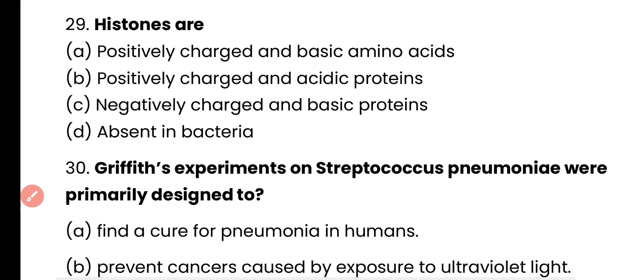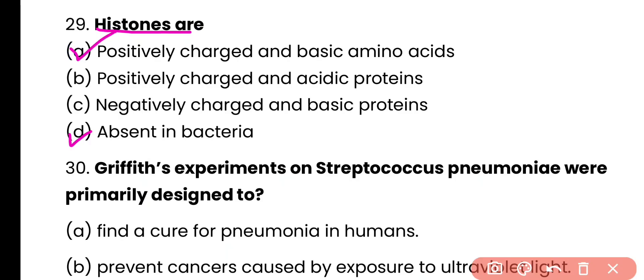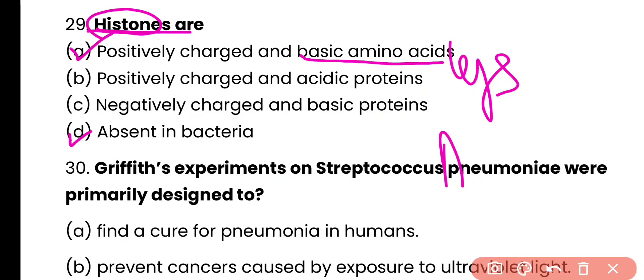Question number 29. Histones are: positively charged and made of basic amino acids, positively charged and acidic protein, negatively charged and basic protein, or absent in bacteria? Correct answer includes option A as well as option D. Histones are made up of basic amino acids, i.e., lysine as well as arginine, making them positively charged.